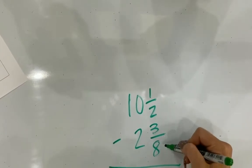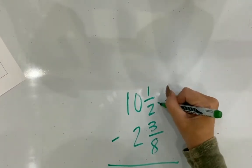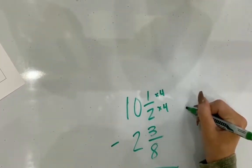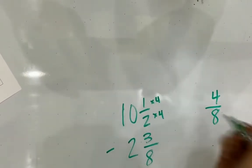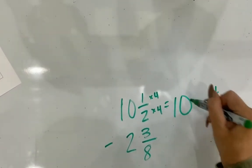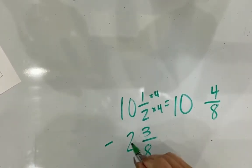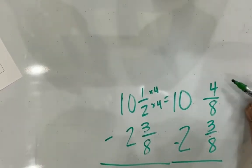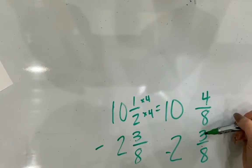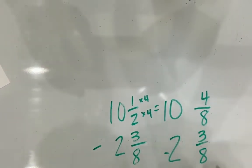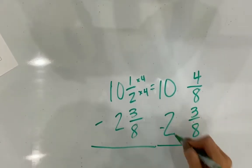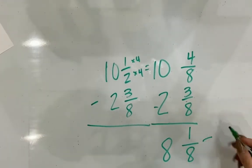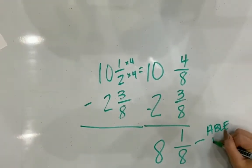I need to find a common denominator. I can make a half into four-eighths by multiplying by four, so that gives me 10 and four-eighths. Then I subtract two and three-eighths. I have four and three in the numerators so I can subtract: that gives me one-eighth, and 10 minus 2 gives me 8. So I have eight and one-eighth — this is how much of the board I'm actually able to use.